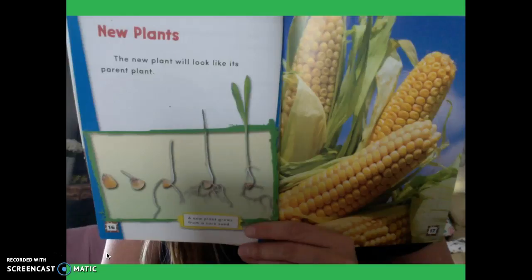New plants will look like its parents' plants. Do you notice this big picture here, boys and girls? This is actually called a diagram. This is another text feature that you find in a lot of nonfiction text. A diagram is a picture that helps you learn by not having to read any of the words. You're simply looking at the picture. I can tell in this picture that a new plant grows from a corn seed. You can also add captions to diagrams like you see here.